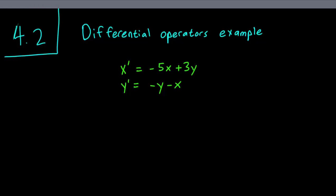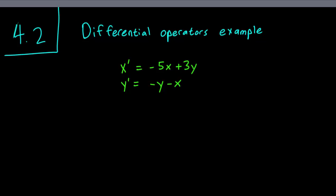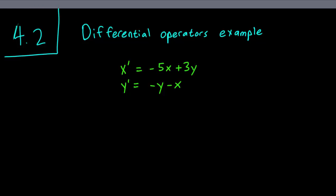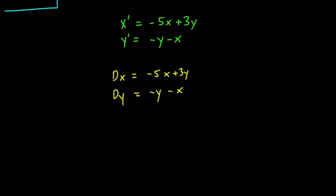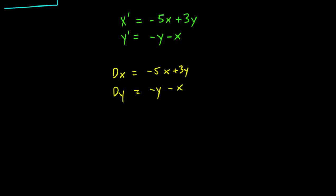The first thing we have to do is to convert this system of differential equations to the differential operators notation. So we rewrite the primes as these. dx equals minus 5x plus 3y and dy equals minus y minus x. Next, we move everything to the left side. We prefer to have the x term first and then the y term, so we have dx plus 5x minus 3y equals 0.